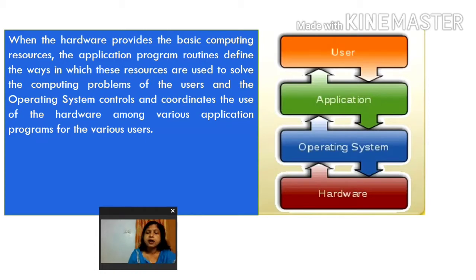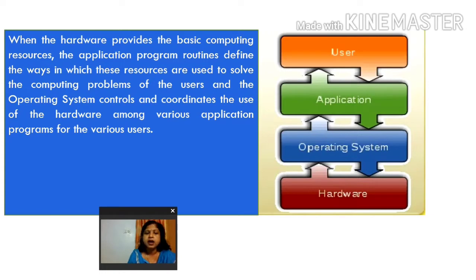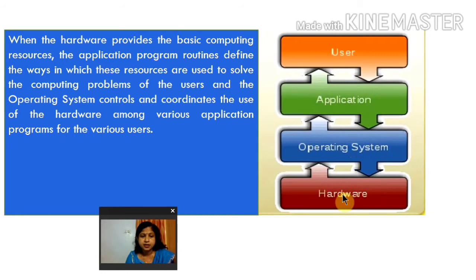Application software is used to solve our real problems — what we want to do. For example, we use Microsoft Word for typing letters, Excel for calculations, PowerPoint for presentations, and database management systems for storing large volumes of data in an organized manner. These application softwares use the hardware to do our work, and the operating system coordinates between them.